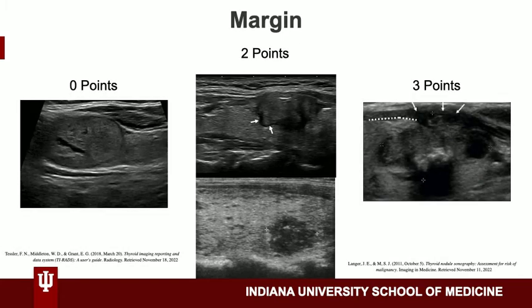Here we want to pay attention to the margins. If it has a smooth margin it gets zero points. If the margin is lobulated or irregular it gets two points. And if there is extrathyroidal extension it gets three points.